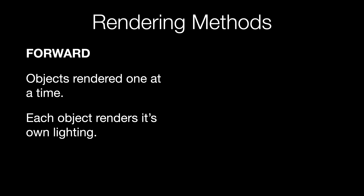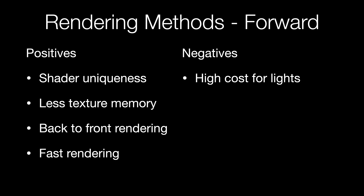This approach has some positives and some negatives. Because each object's shader does the lighting, this method has the potential to use a different lighting model for every object, giving a huge amount of flexibility for using a variety of lighting models. This method also requires less VRAM or texture memory. With forward rendering, you can control the order that objects are drawn in, so you can render objects from furthest away to closest to the camera — sometimes called back-to-front rendering. This is a requirement for objects that are transparent. For simple scenes, forward rendering is a simple and fast rendering method. On the other hand, for complex scenes, especially with a high number of light sources, forward rendering can get quite expensive.